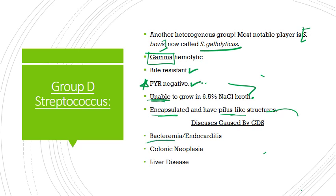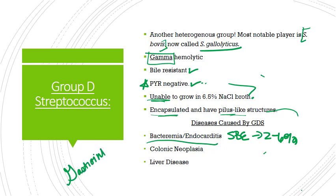Group D strep causes bacteremia and endocarditis. It's normally a cause of subacute bacterial endocarditis, accounting for about 2-6% of streptococcal bloodstream isolates from hospitalized patients. It most likely enters from the gastrointestinal tract, where it appears to be a commensal bacterium, then gets into the bloodstream and sets up shop on heart valves. There's also a strong correlation between colon cancer and Group D strep, as well as advanced liver disease, though the mechanisms for both are unknown.